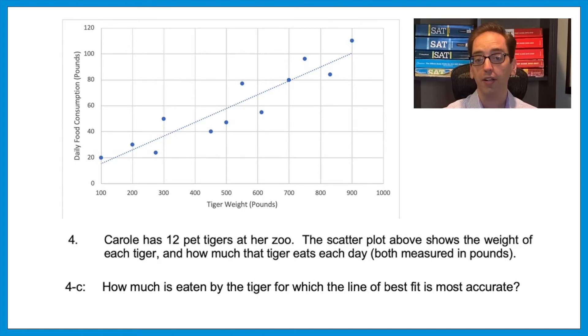4c: How much is eaten by the tiger for which the line of best fit is most accurate? Most accurate means they want to find the dot that falls closest to the line. So in this case, the dot is right on the line for the 700-pound tiger. That would be 80 pounds. The answer is 80.